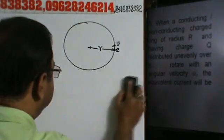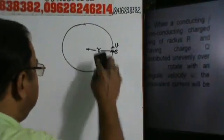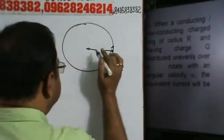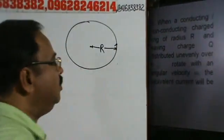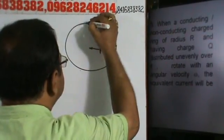Ab dekhiye aahin par ham kattah hai, suppose, this is a ring, this is a ring of radius R. Now this is a ring of radius R, which is having charge Q. Is ring ke upar mein total charge Q hai.